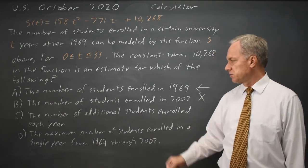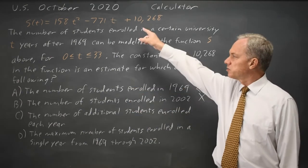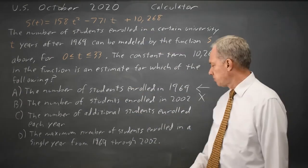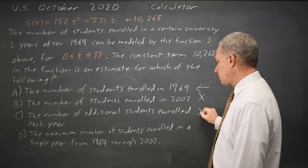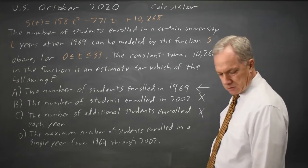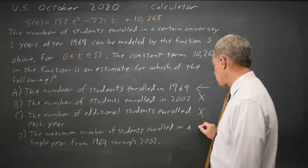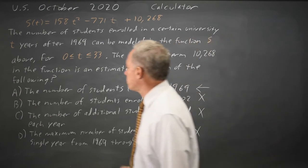The number of additional students enrolled each year is also not accurate. This is a quadratic, so the number of students enrolled each year varies. And maximum number of students in a single year is not correct because we just saw we went over 150,000 students. So choice A would be our answer.